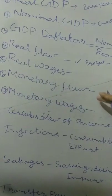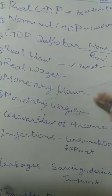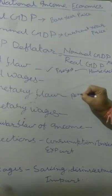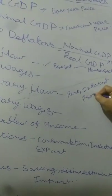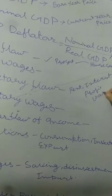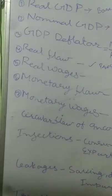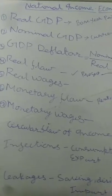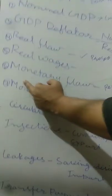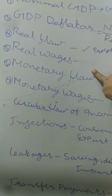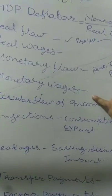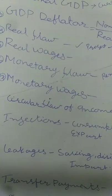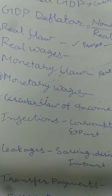Monetary Flow: the flow of factor payments in the form of rent, interest, profit, and wages from the production sector to the household sector is known as monetary flow. Real wages refers to the standard of living which a person can attain through their monetary wages, while monetary wages refers to the cash payment which a factor of production receives through its producer in a production activity.